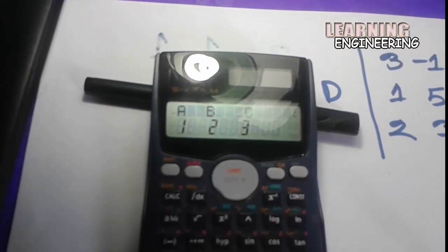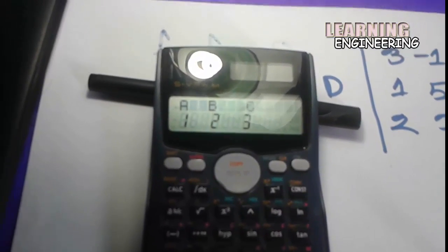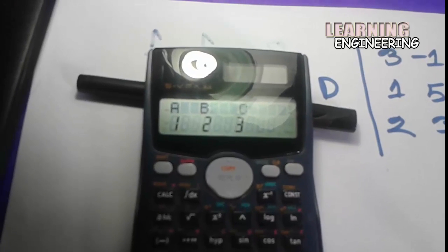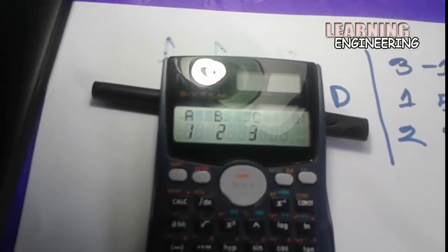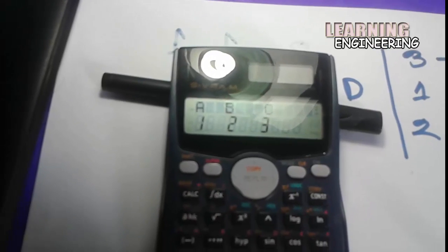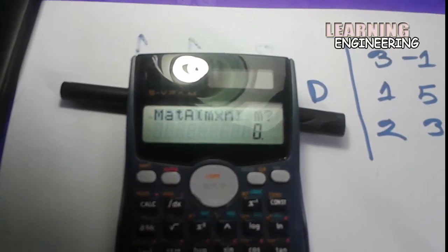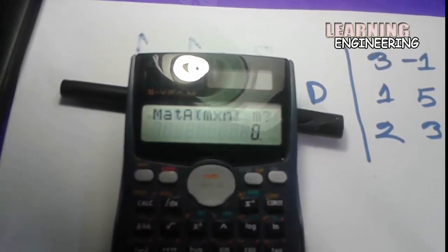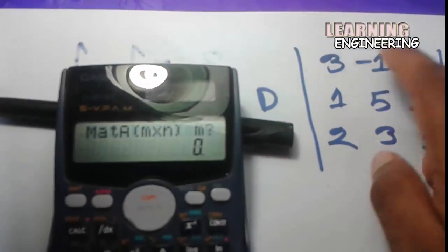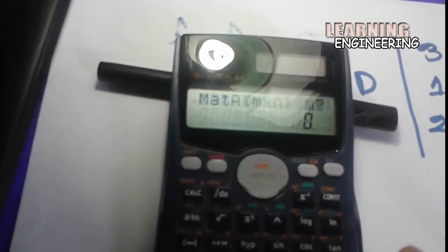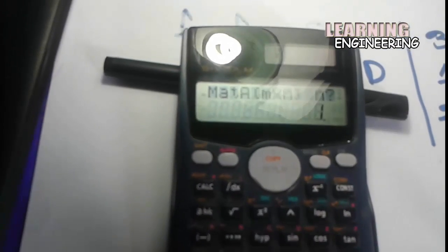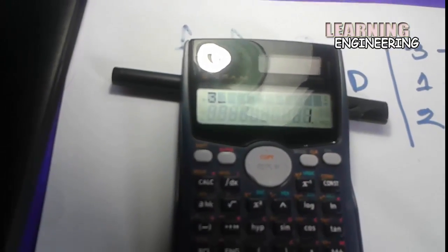Here you see A, B, C — these are memory locations. I will select A, so press one. Then it asks for matrix M by N — that is rows and columns. Here it is a three by three matrix. I will press three, equal, three, equal.